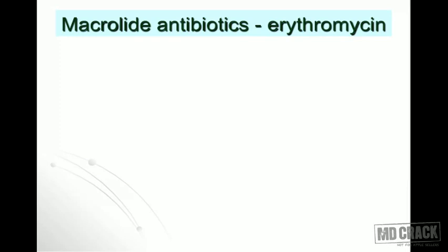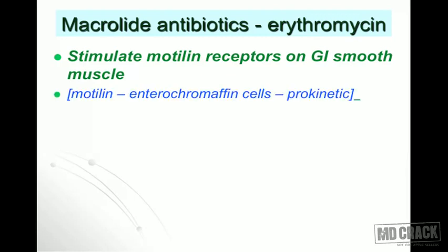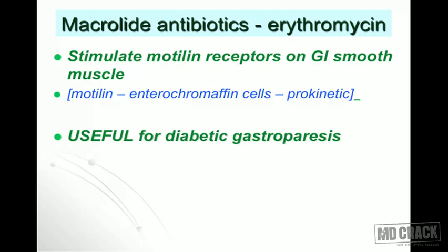Macrolide antibiotics — specifically erythromycin — stimulate the motilin receptor on GI smooth muscle. Motilin, secreted by enterochromaffin cells, is a prokinetic agent, so erythromycin acts like motilin. Erythromycin is useful for diabetic gastroparesis to regulate gastric motility. However, you cannot use erythromycin long-term because tolerance develops on chronic use.